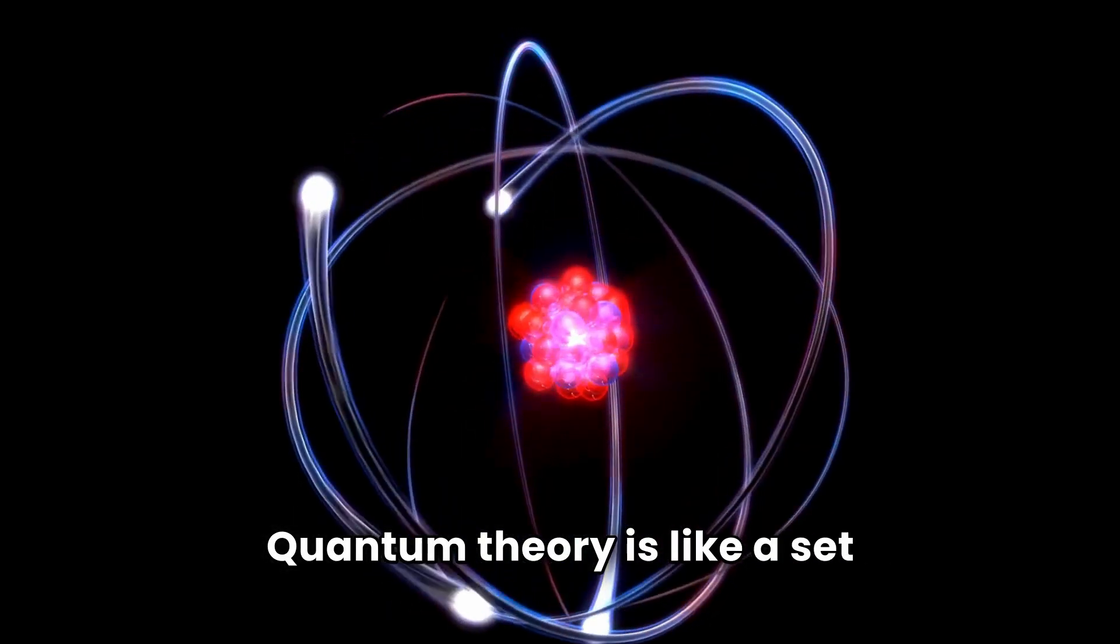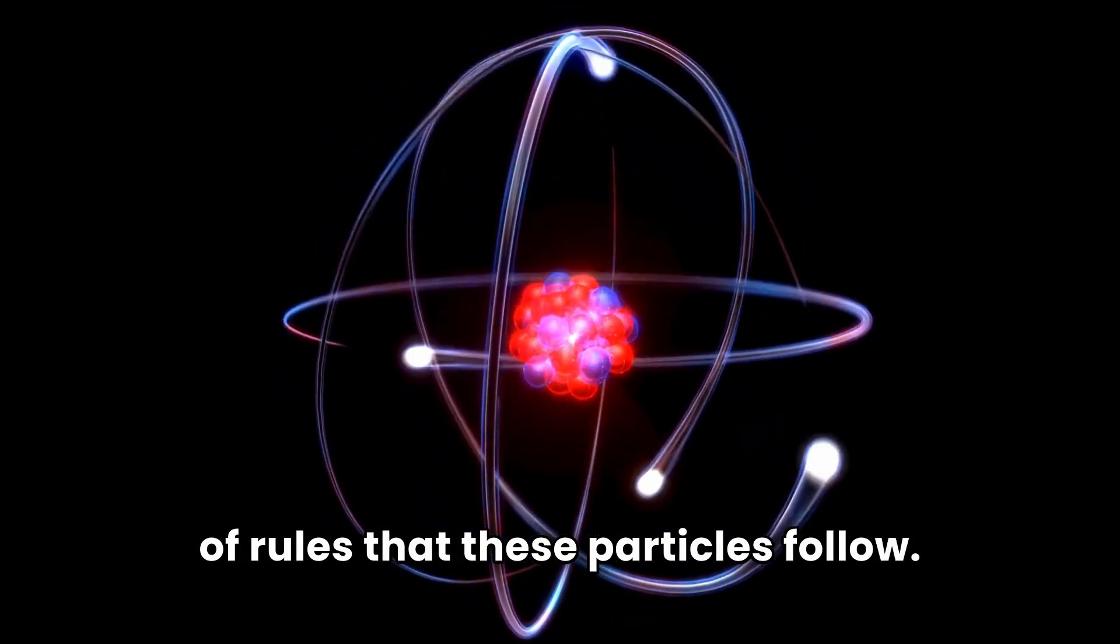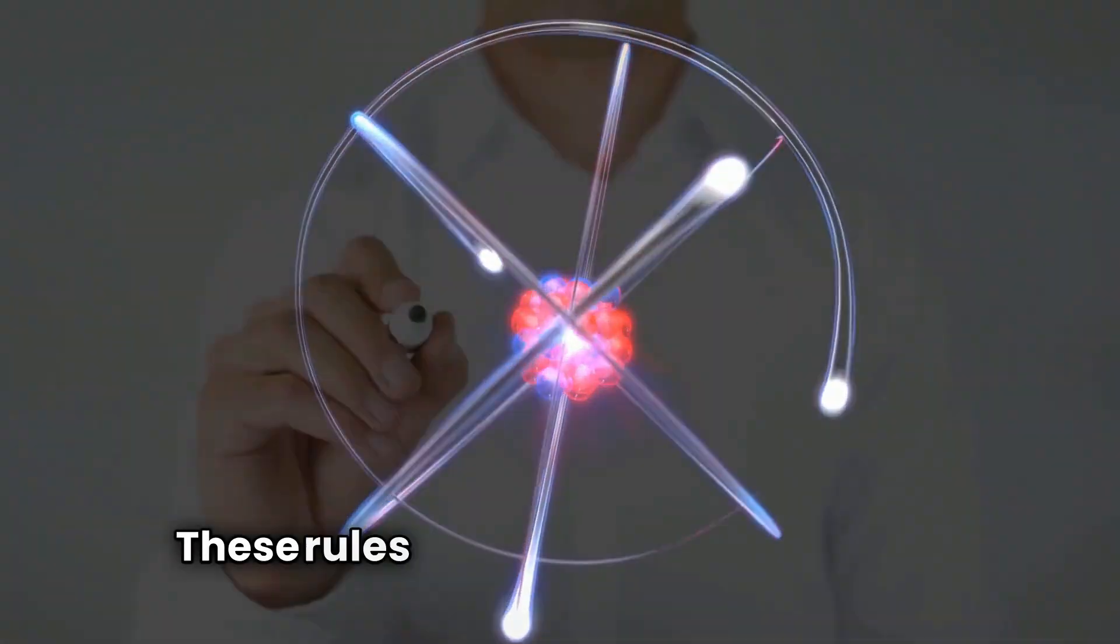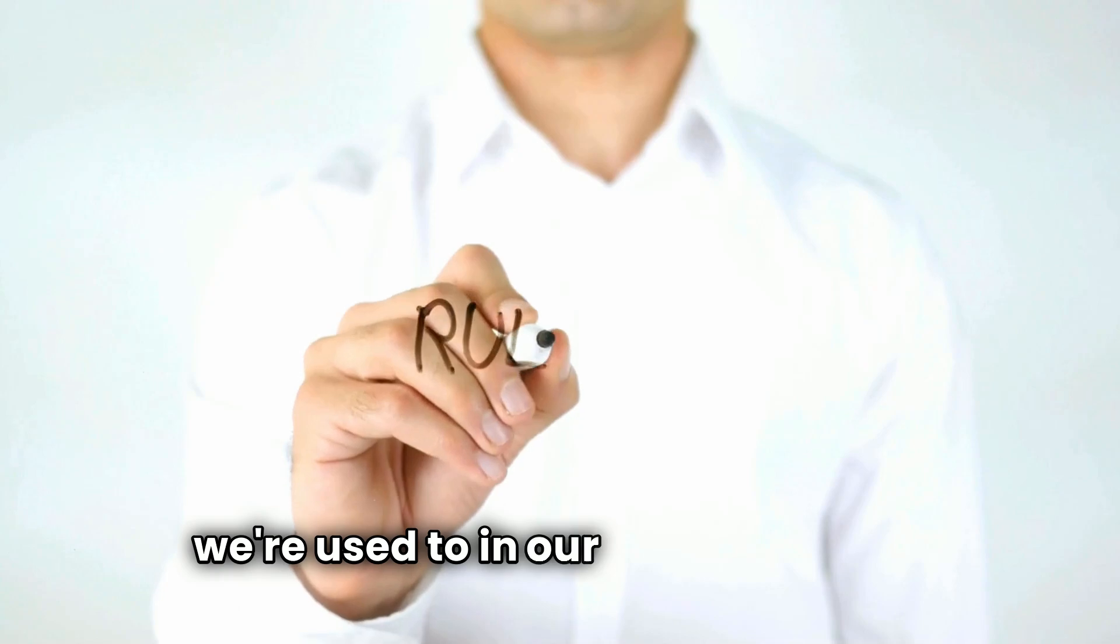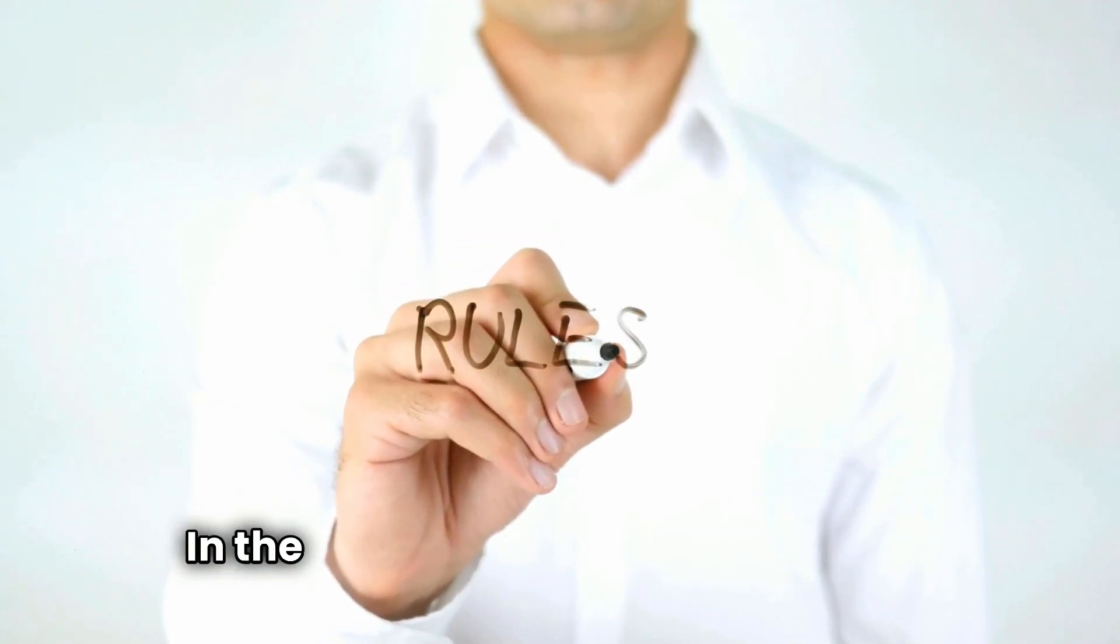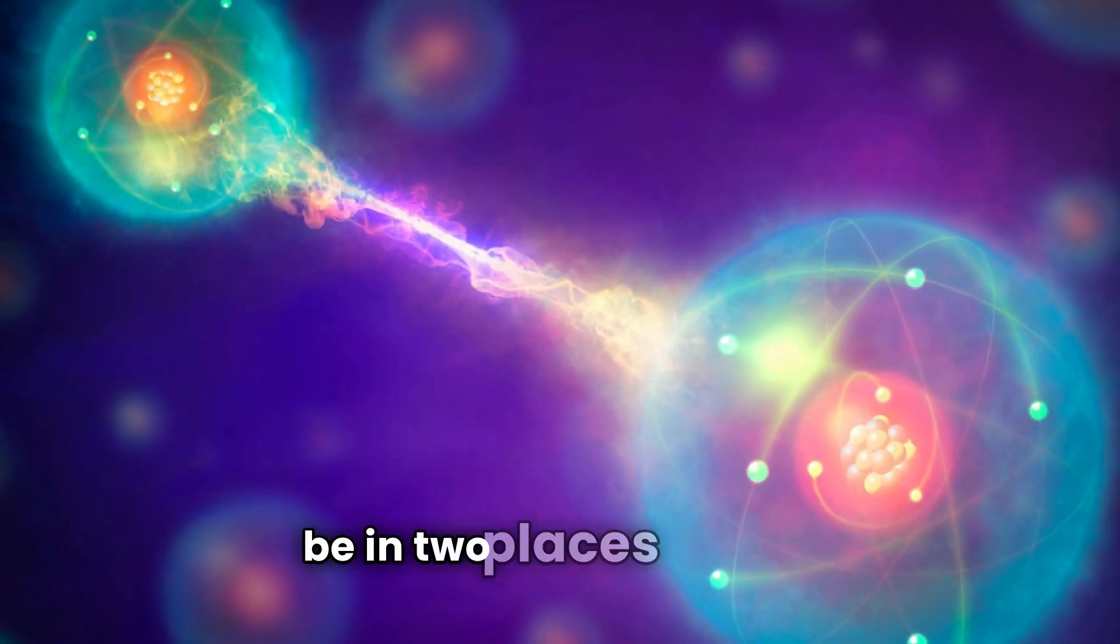Quantum theory is like a set of rules that these particles follow. But here's the twist. These rules are nothing like the rules we're used to in our everyday lives. In the quantum world, particles can be in two places at once.